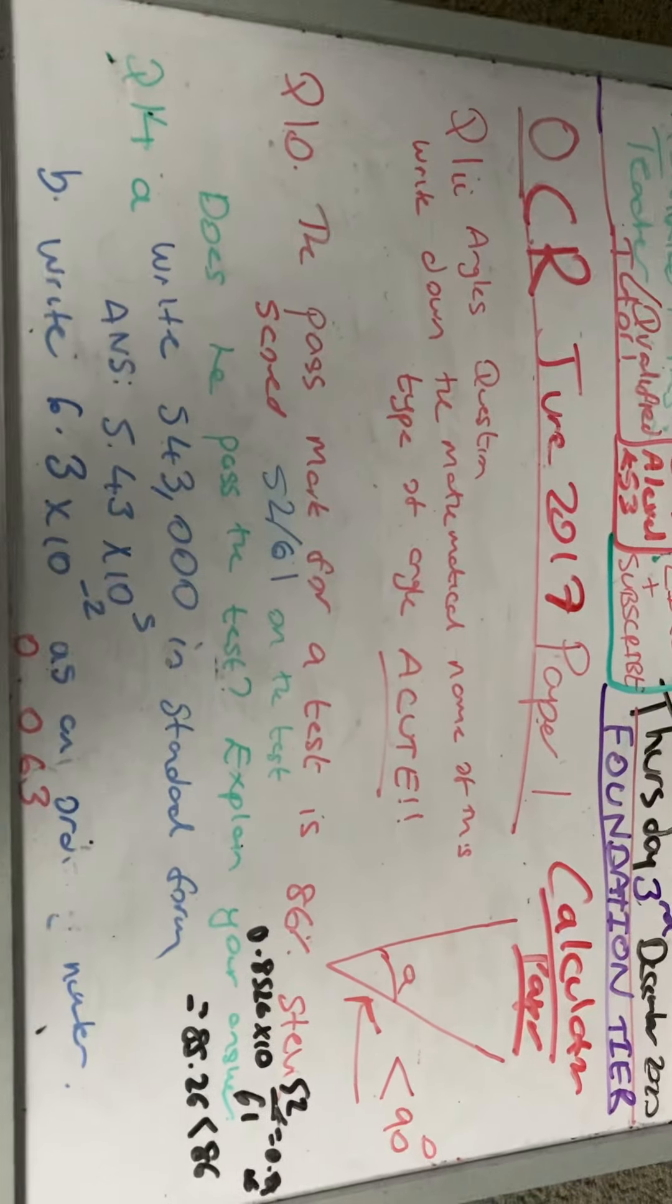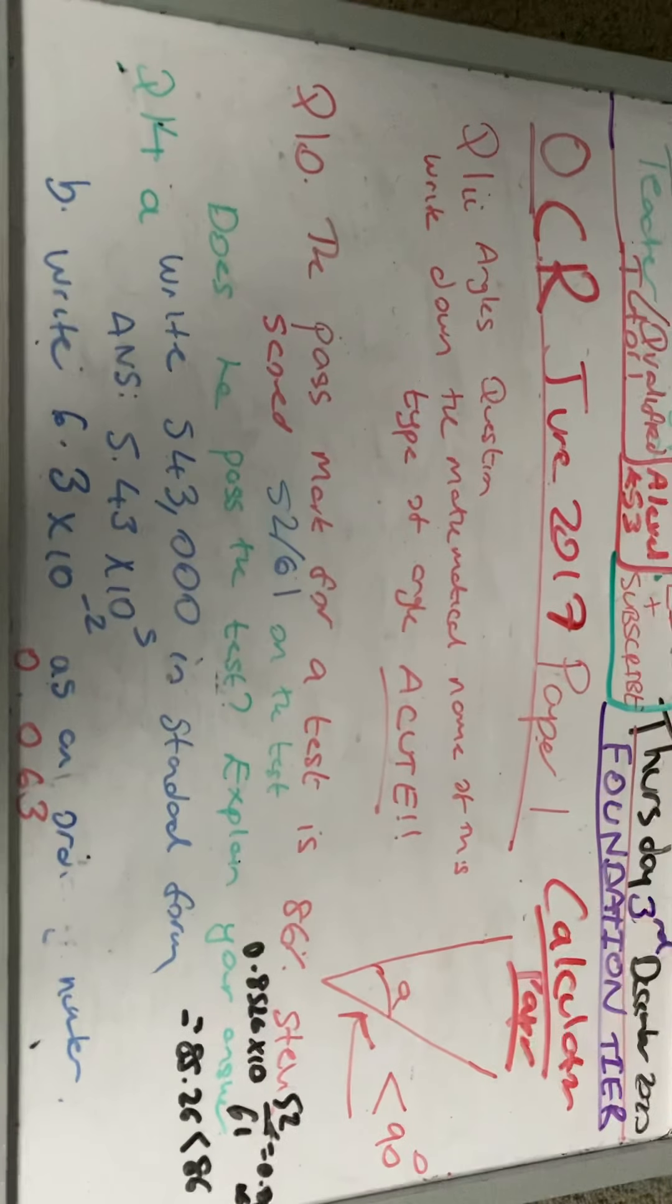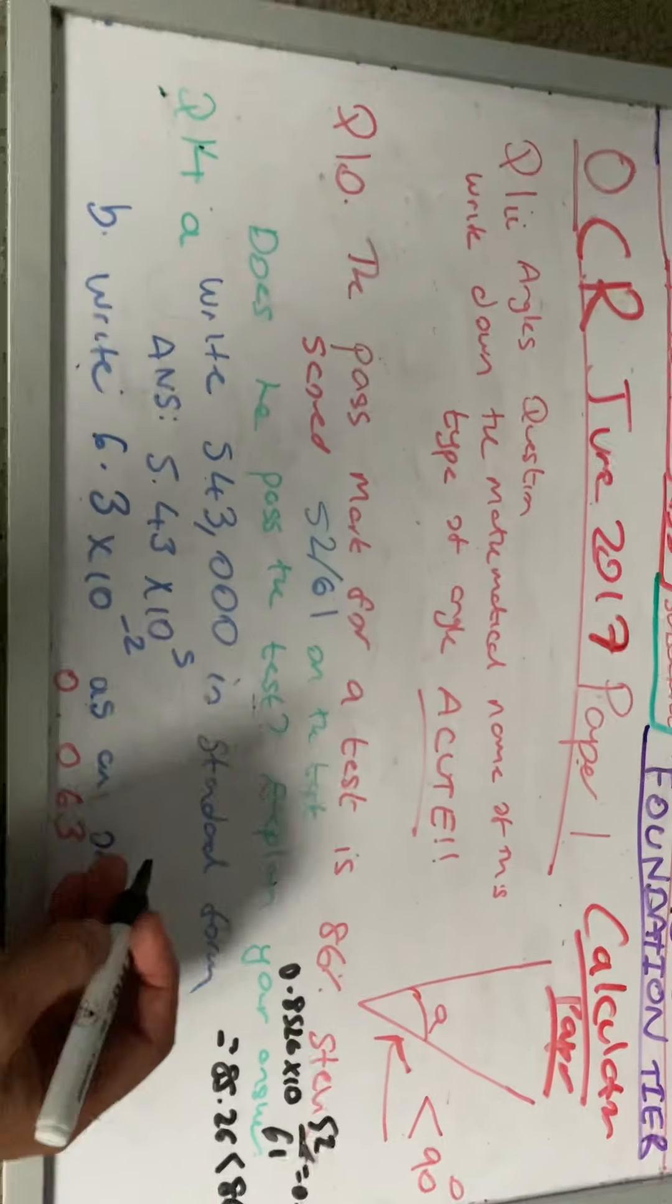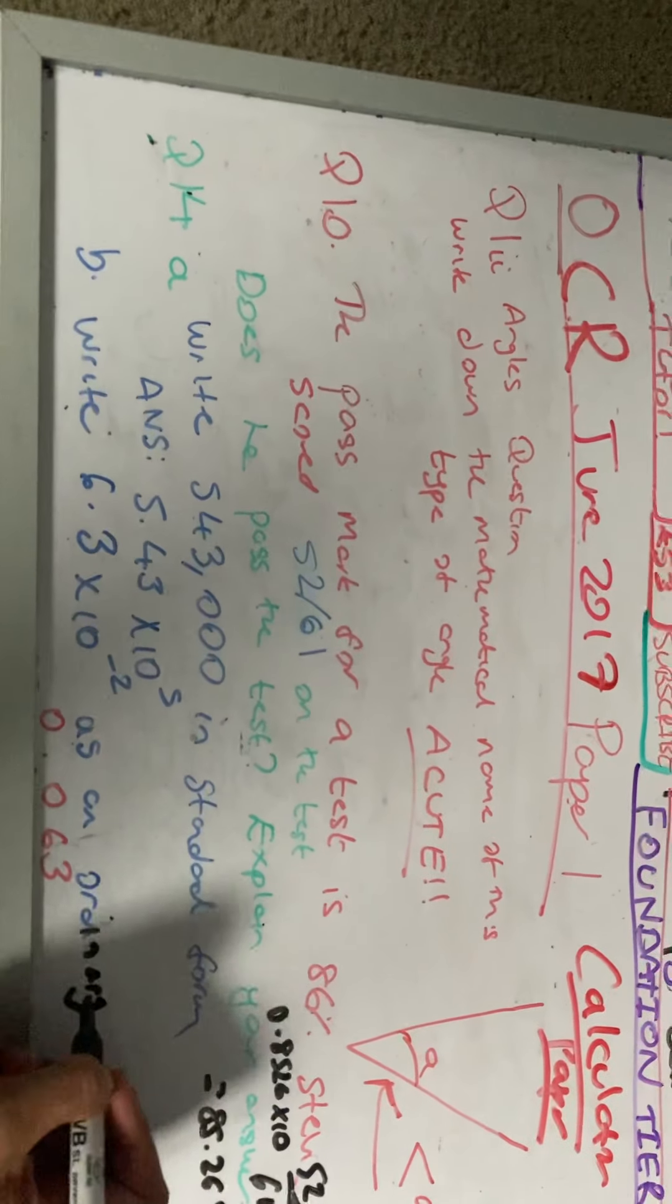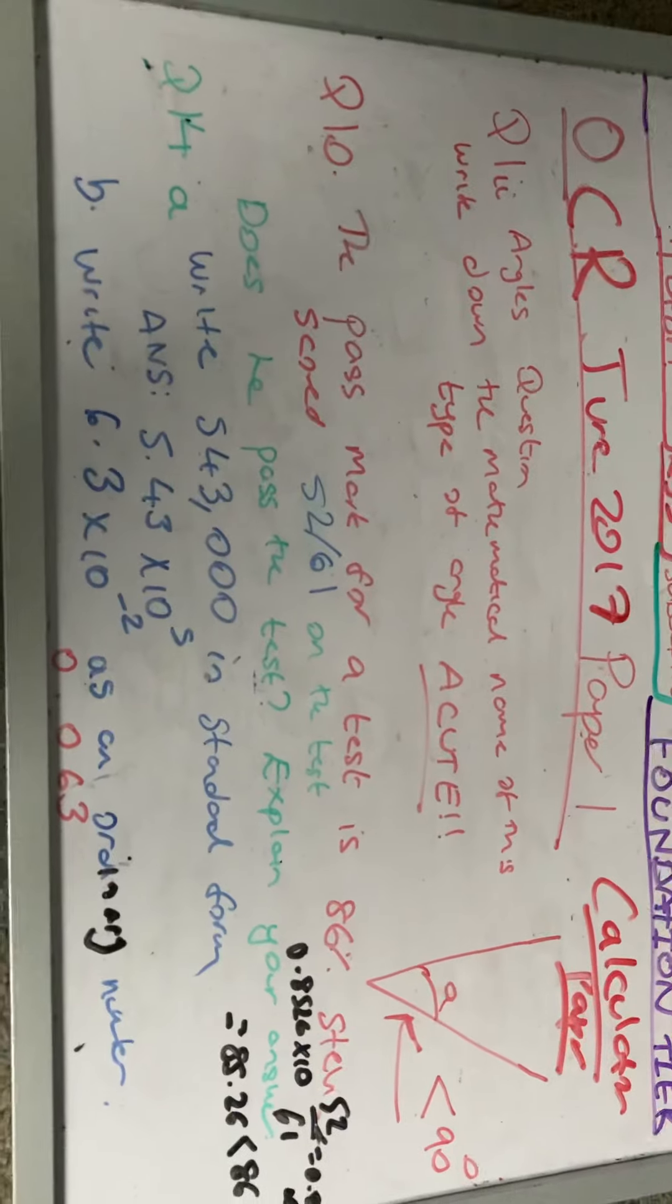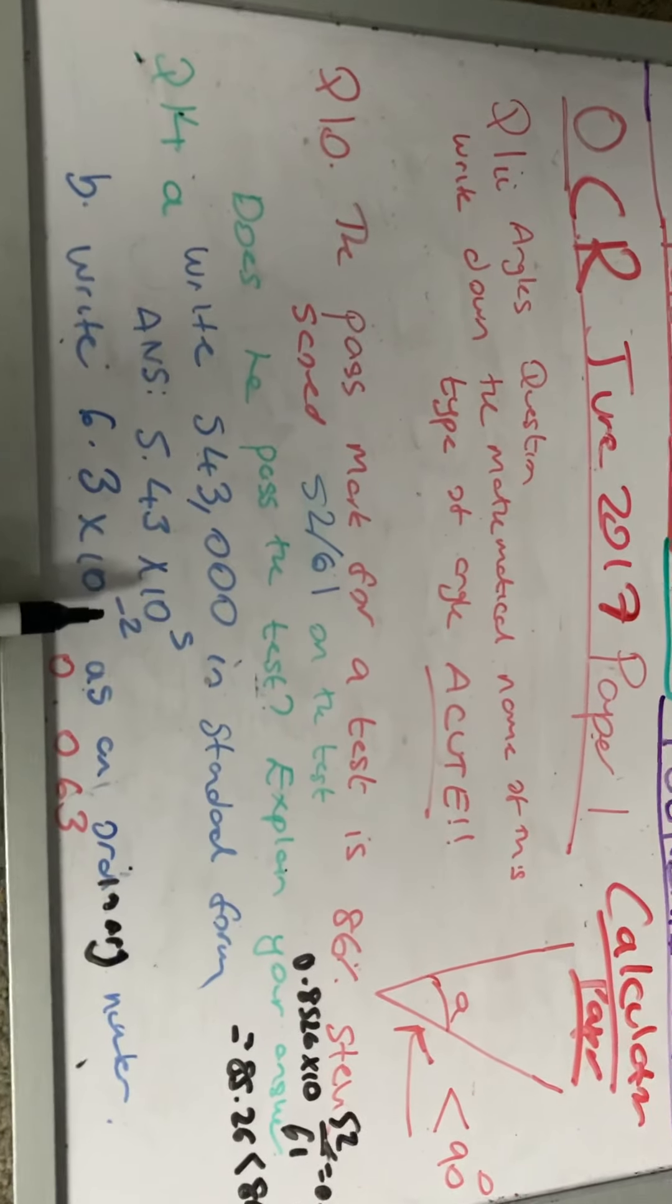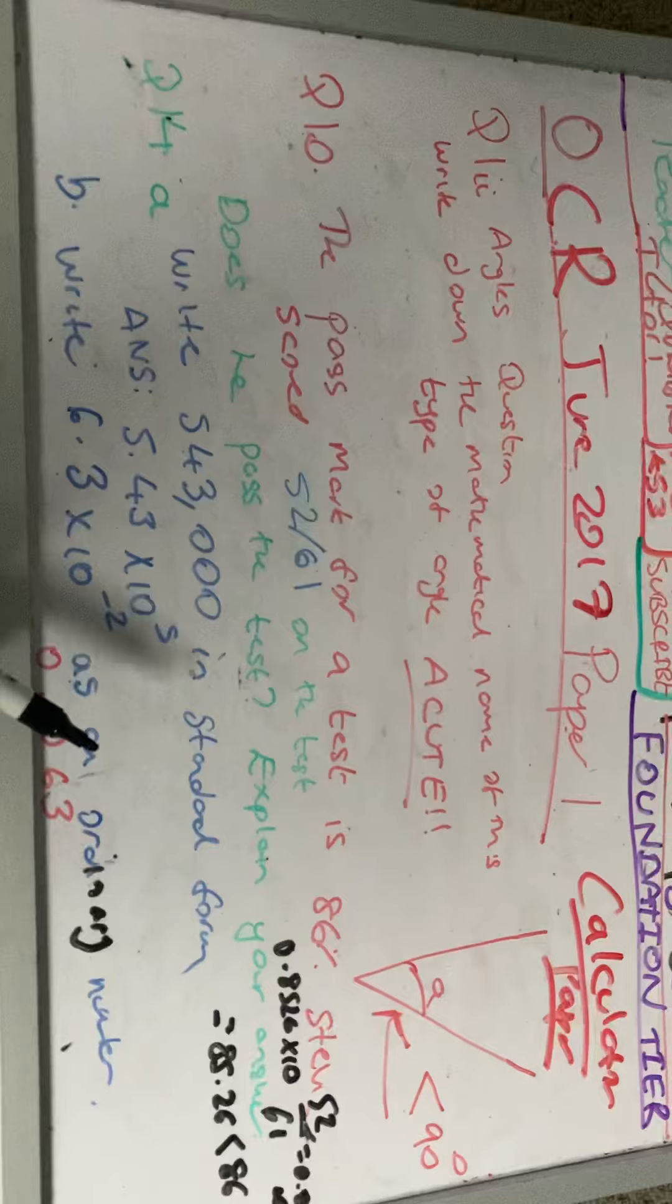Last question. Write 6.3, so part B for today's lesson. 6.3 times 10 to the minus 2 as an ordinary number. The answer is 0.063. The minus there means that my answer is smaller. So the answer is 0.063 for my ordinary number.